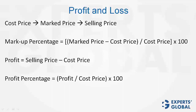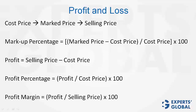Profit % is profit divided by cost price times 100. Remember, profit % is on the base of the cost price — it is not on the selling price. It is profit margin which is on the selling price.